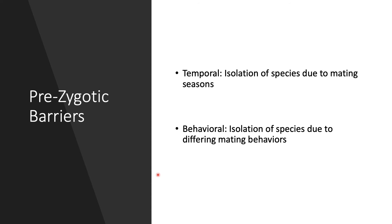Next is temporal isolation — 'temporal' meaning time. This is the isolation of species due to differing mating seasons. We mostly see this in plants, but some animals experience it too. Some animals might have mating seasons in the spring while others have theirs in the fall, making them incompatible with each other.